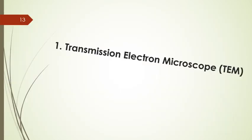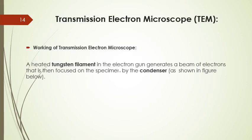Now we discuss the transmission electron microscope in detail. The assembly of a transmission electron microscope is complex and sophisticated, but the basic principle behind its operation can be easily understood. A heated tungsten filament in the electron gun generates a beam of electrons that is then focused on a specimen by the electromagnetic condenser lenses.